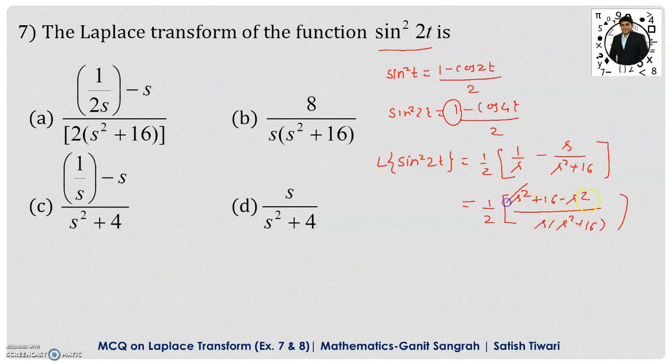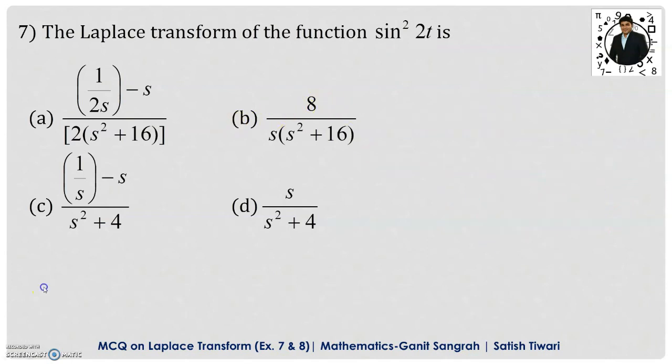The s² terms cancel out, leaving 16 / (2 · s(s² + 16)), which simplifies to 8 / (s(s² + 16)). Comparing with the options, option B is the correct answer.